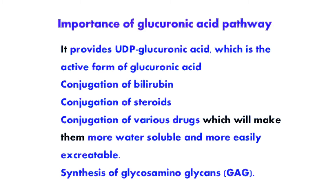Apart from that, glucuronic acid also takes part in conjugation reactions involving various drugs, making the drugs highly water soluble so that they can be easily excreted from the body. This type of reaction is called detoxification. So glucuronic acid is involved in the detoxification of many drugs, and it also involves the synthesis of glycosaminoglycans. When glucose is oxidized at the sixth carbon, we get glucuronic acid.